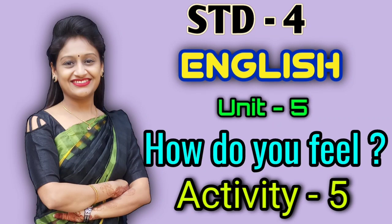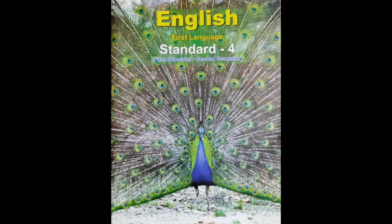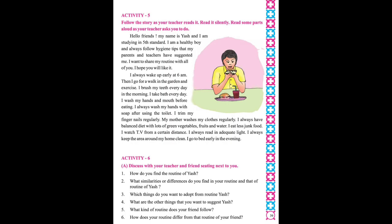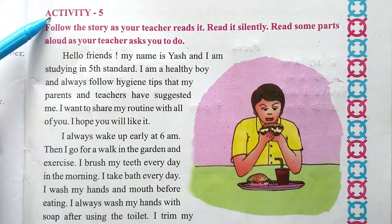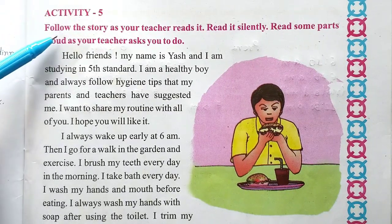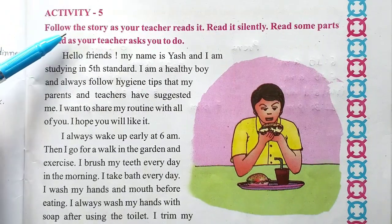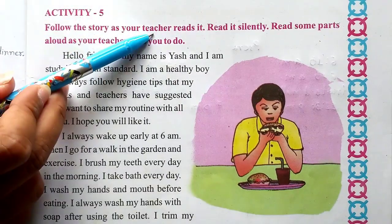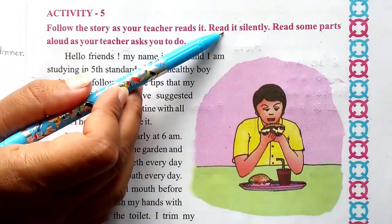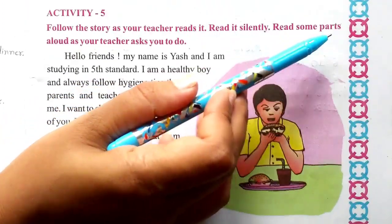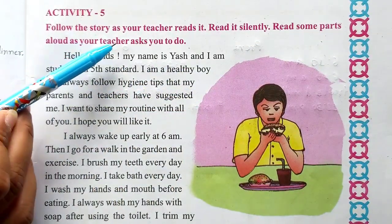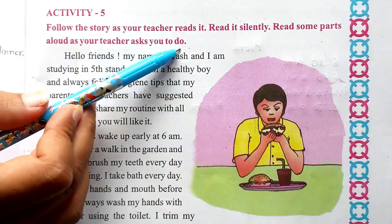Hello students, welcome to you all in today's class of English. Open your textbook. Open page number 39. Activity 5 — follow the story as your teacher reads it. Read it silently, and read some parts aloud as your teacher asks you to do.